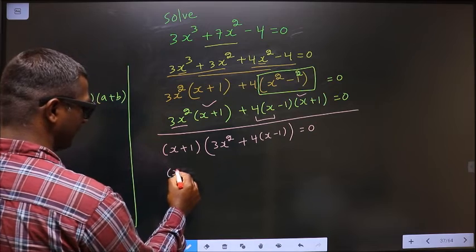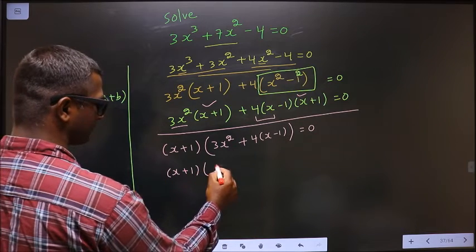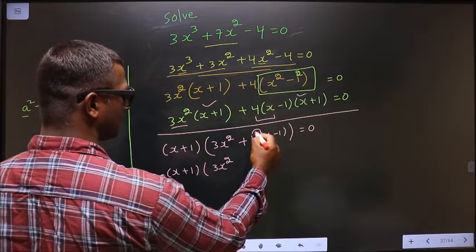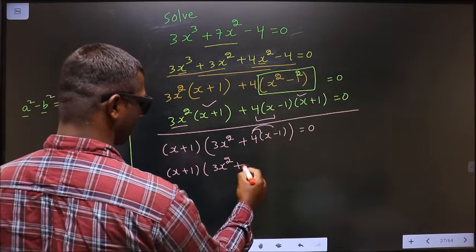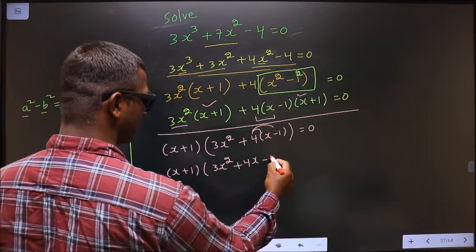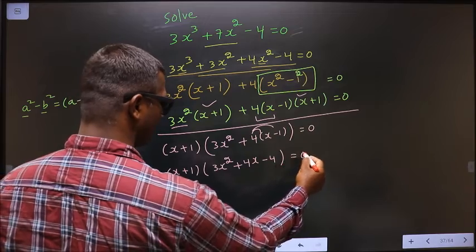Next, x + 1. Here you open up the bracket in this way. We get 3x² + 4x - 4 = 0.